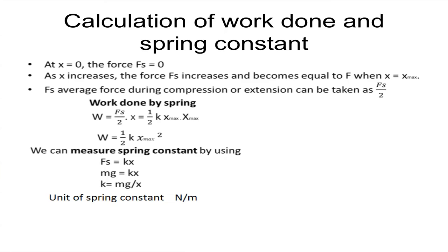We can also measure the spring constant using a spring mass system where a mass is attached to a spring. The weight mg acts downwards due to gravity and the spring stretches to maximum x. Therefore F_s equals the gravitational force, which means mg = kx and k = mg/x. The unit of the spring constant is Newton per meter.